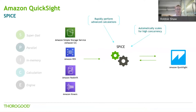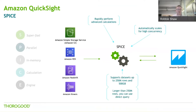SPICE will automatically scale to meet high concurrency. If there are multiple users accessing the same dashboard and the same data, SPICE will scale up to meet that demand. It supports data sets up to 250 million rows or 500 gigabytes, which is pretty mega for an in-memory data visualization engine. If you do need to go larger than that, you can with QuickSight - it just means you would have to direct-query the original data source, skipping SPICE and drawing data directly from, say, Amazon Redshift every time you change the visuals.